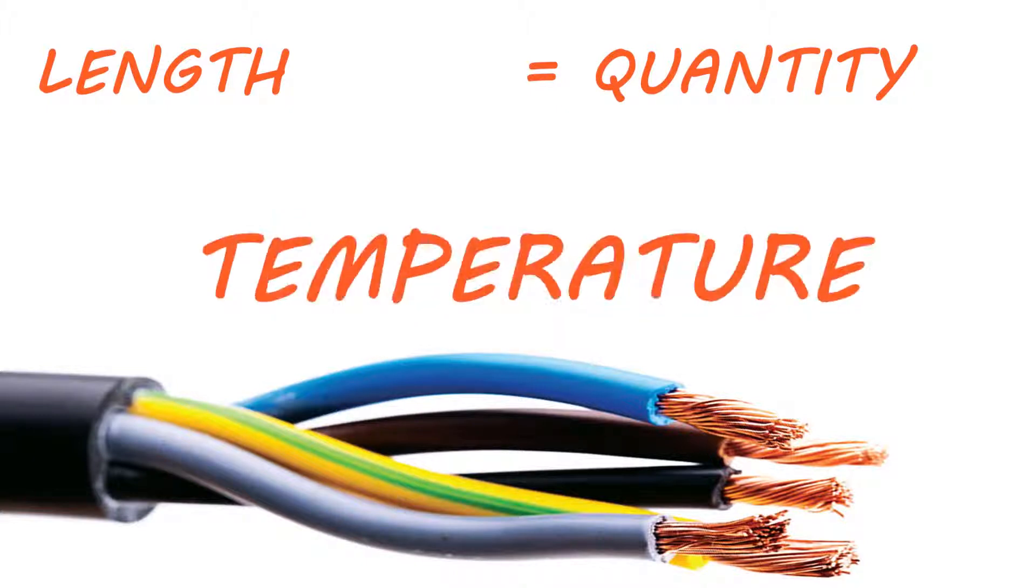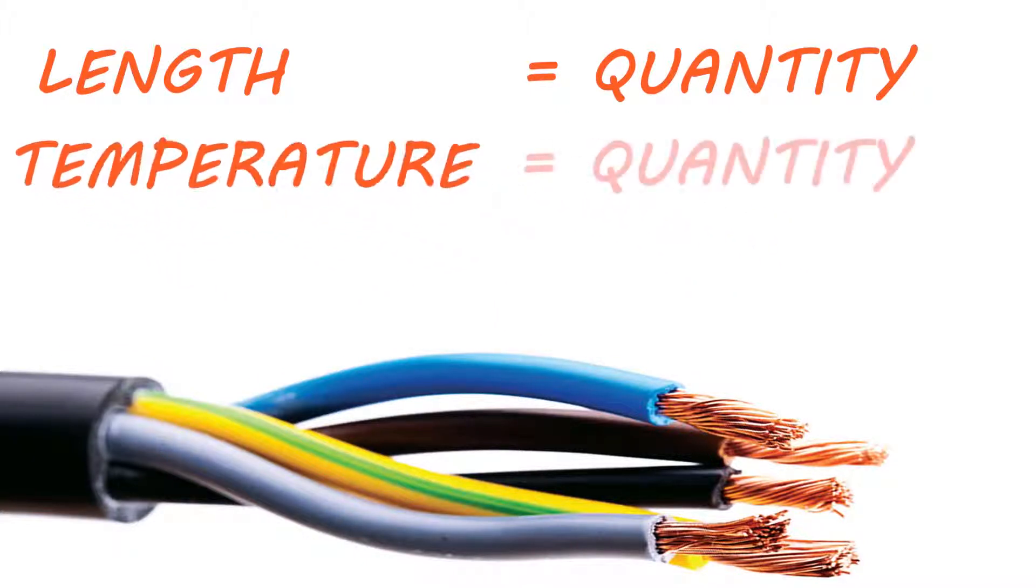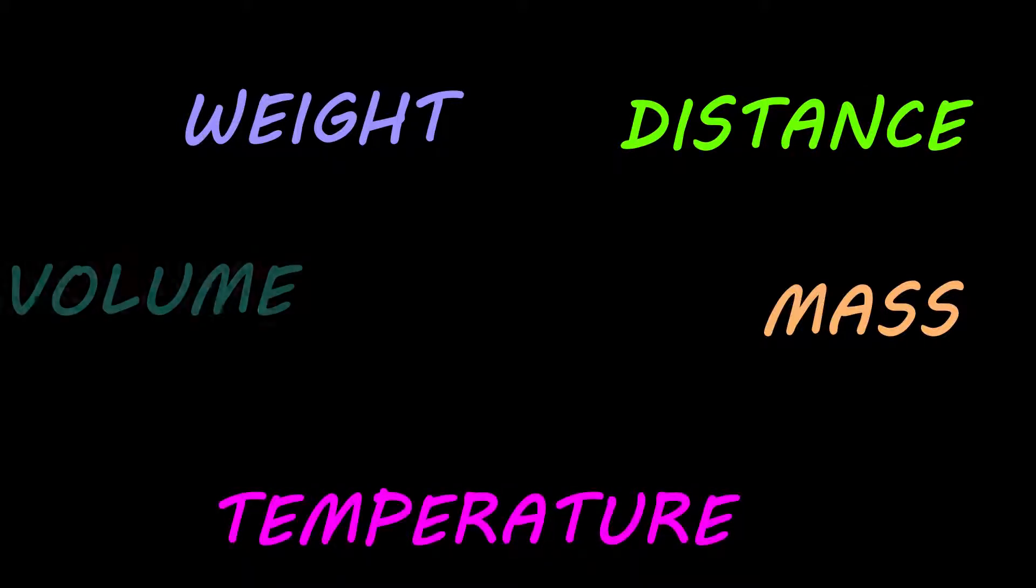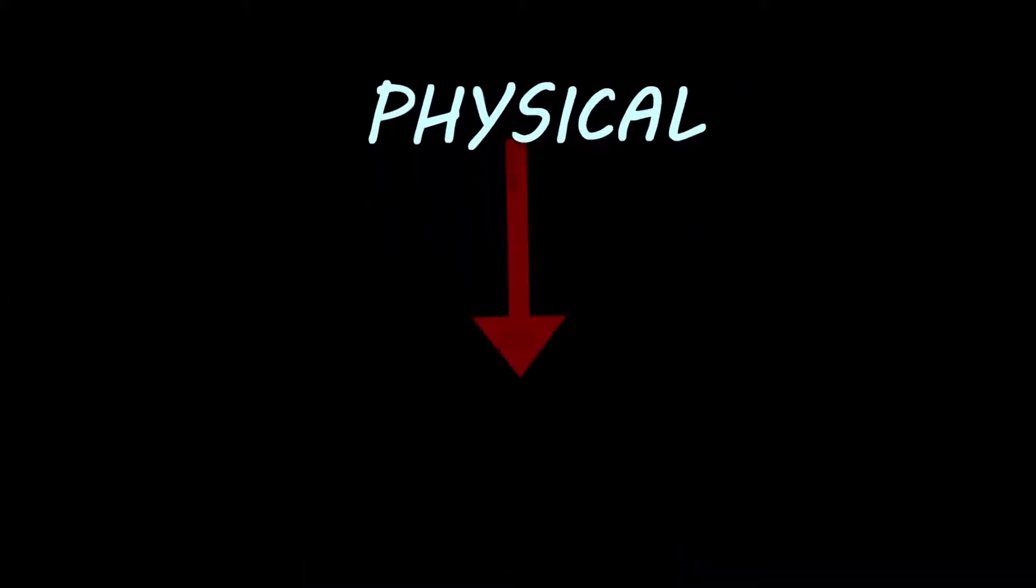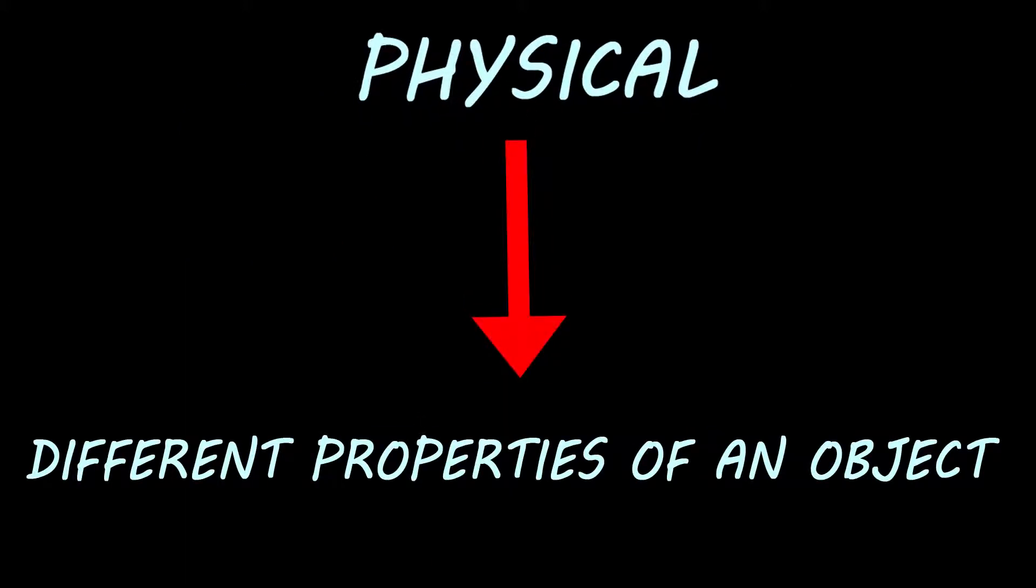Wire has some temperature, so temperature is a quantity. Quantities such as mass, weight, distance, temperature, volume are called physical quantities. Physical means related to different properties of an object.